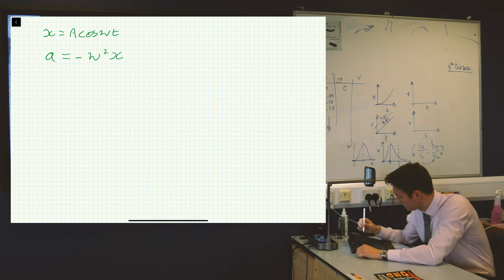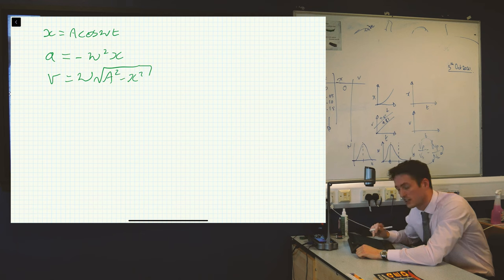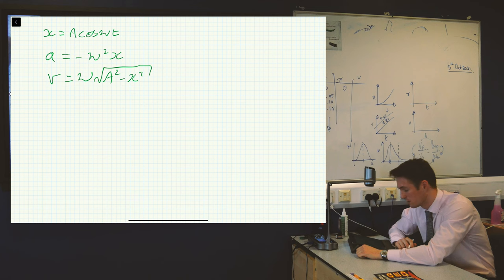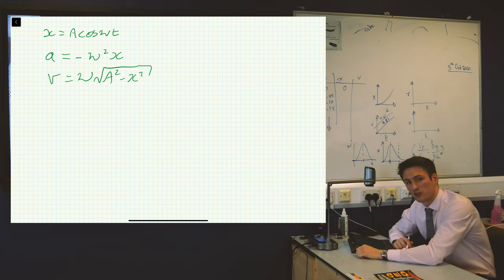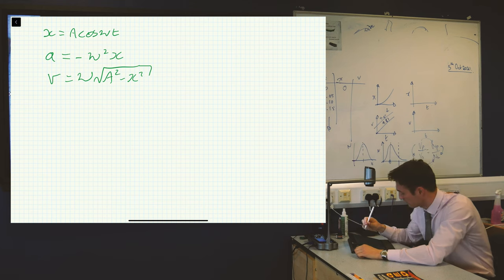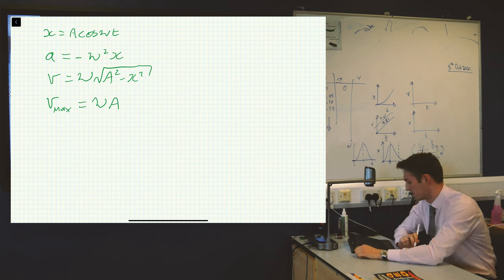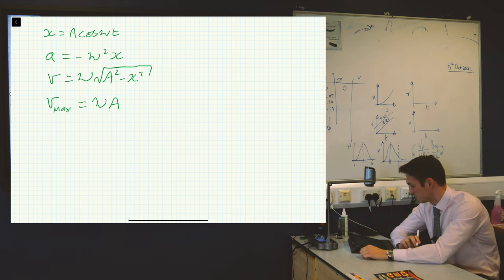The third equation we're going to look at is v equals omega times the square root of A squared minus x squared, where A is the amplitude of the oscillation, x is the displacement, v is the velocity at a point, and omega is the angular frequency. From this equation, we can find a fourth equation for the maximum velocity: V max, which is equal to omega times A.